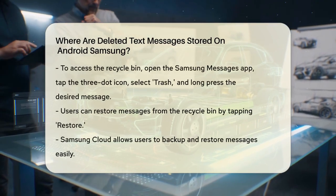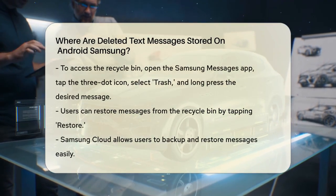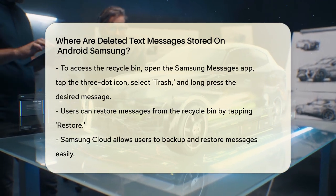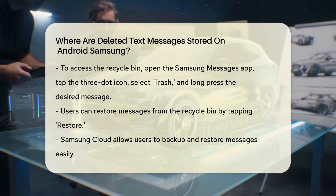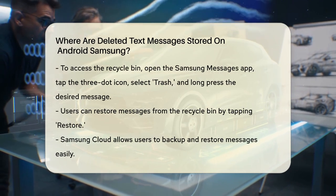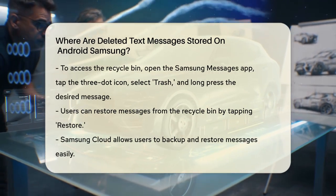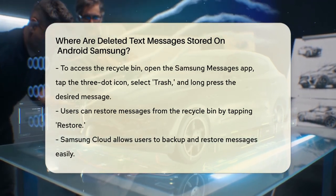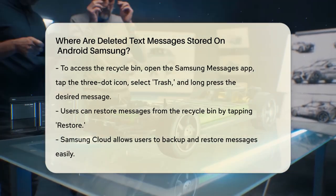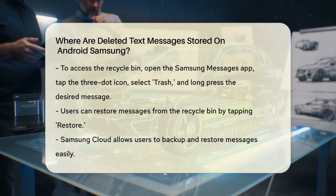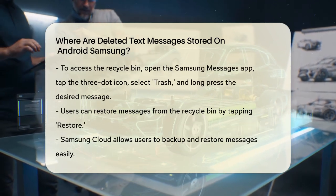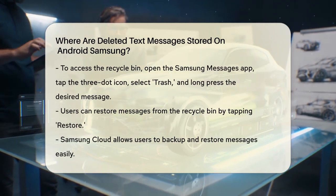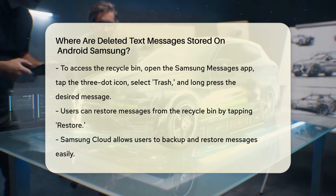If you're using the Samsung Messages app, which is often the default on Samsung devices, you have a few recovery options. One of the most convenient features is the recycle bin. In Samsung Messages, deleted texts are stored in this bin for 30 days before they are permanently erased. To access the recycle bin, open the Samsung Messages app, tap the three-dot icon, select Trash, and then long-press the message you want to recover. You can then tap Restore to bring the message back to your main conversation list.